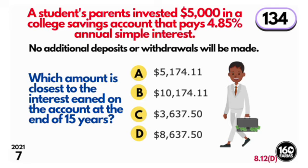Number seven: A student's parents invested $5,000 in a college savings account that pays 4.85% annual simple interest. No additional deposits or withdrawals will be made. Which amount is closest to the interest earned on the account at the end of 15 years?